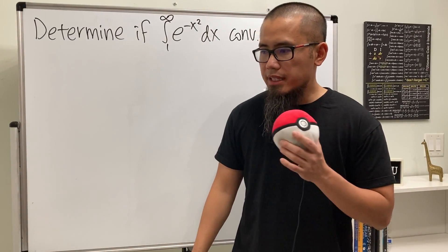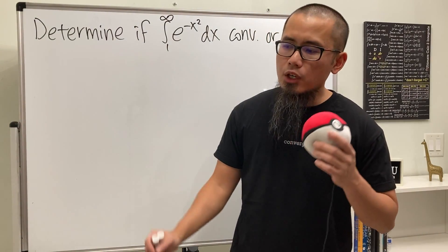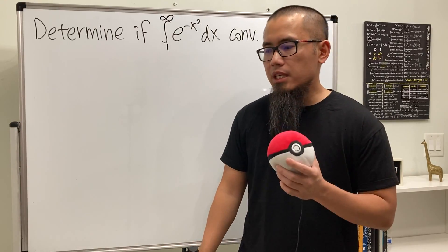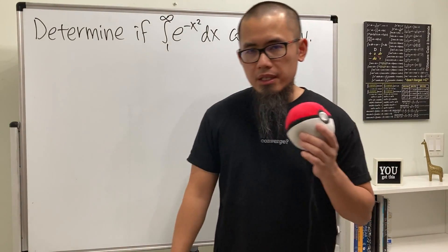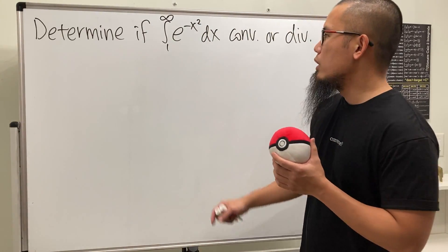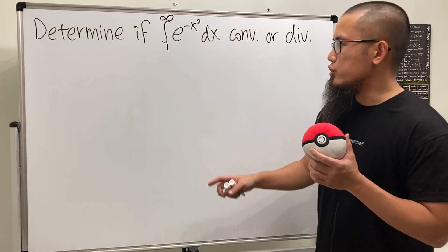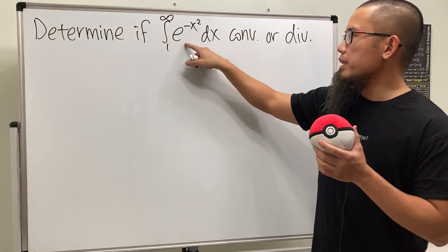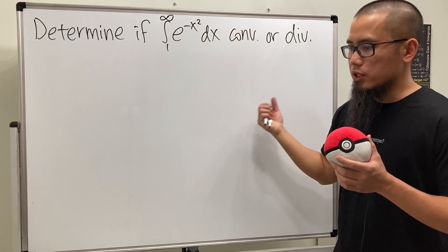The Gaussian integral is the integral going from negative infinity to positive infinity of e to the negative x squared. In this video, I want to show you how to use the comparison test to show if the integral going from 1 to infinity of e to the negative x squared converges or not.